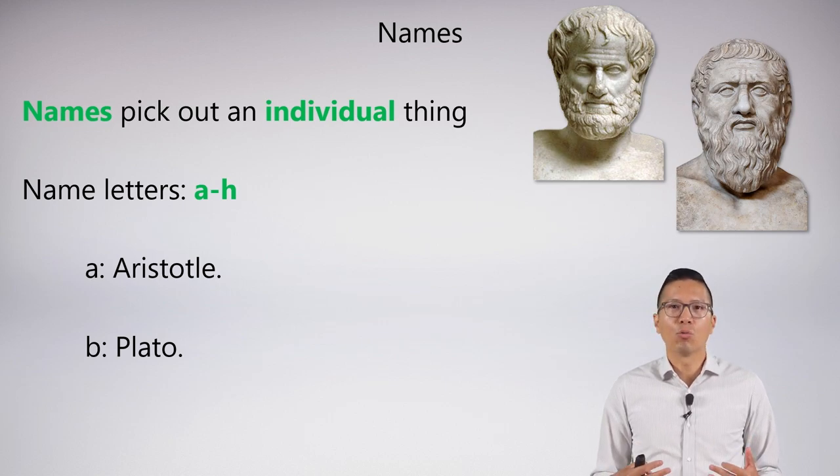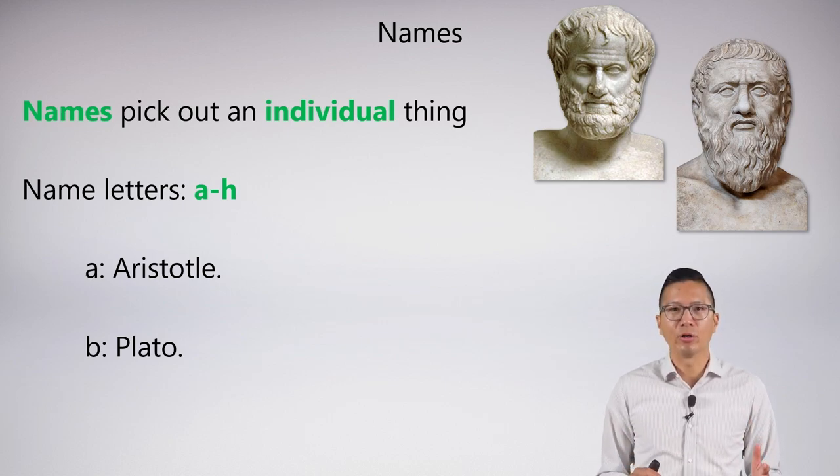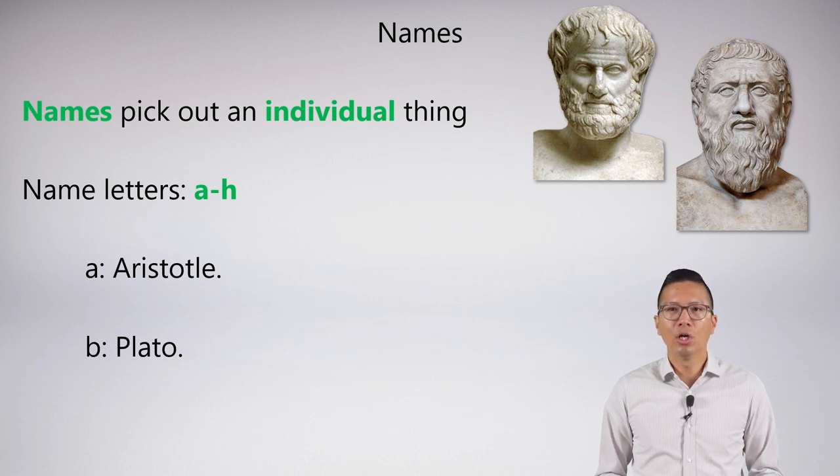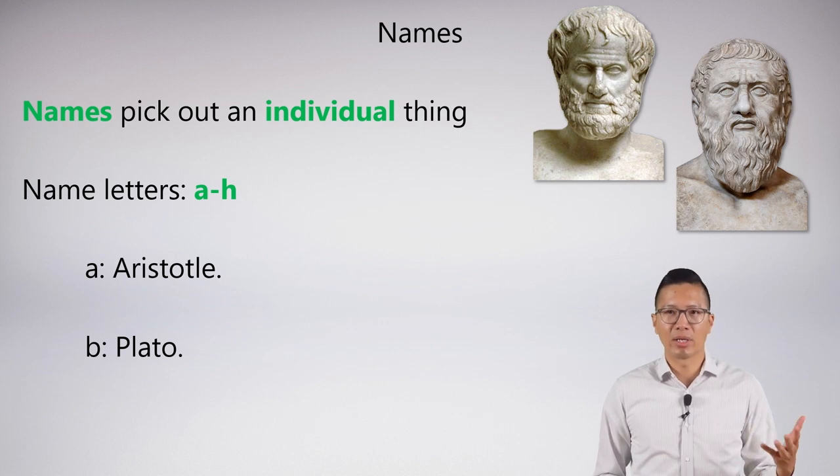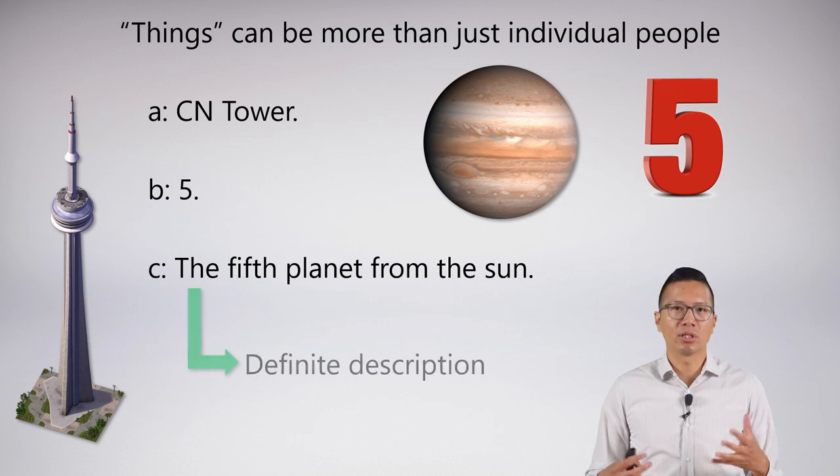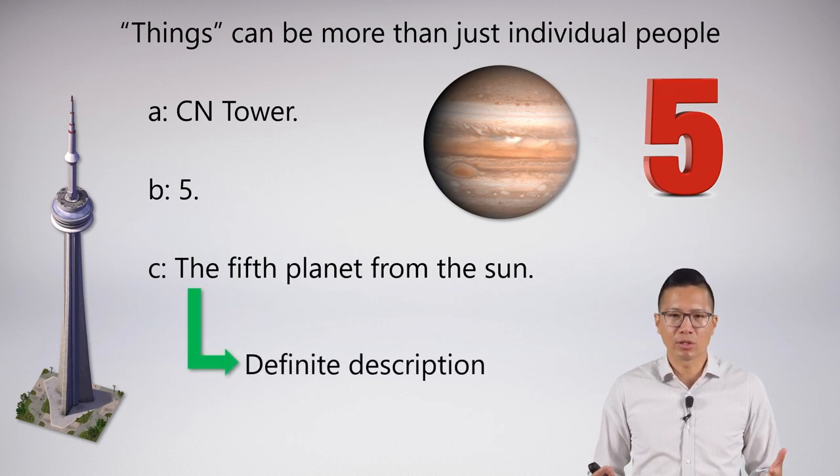For us, we're going to have special name letters which are lowercase a through h, which we'll use in abbreviation schemes to pick out an individual. Whenever you see lowercase a through h, you know it's a name letter and it will represent something or someone.